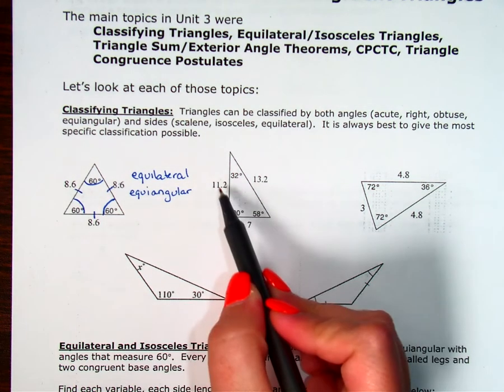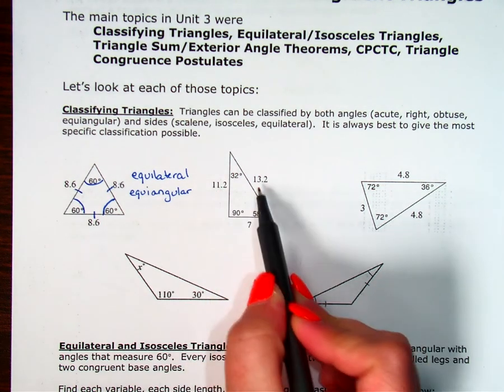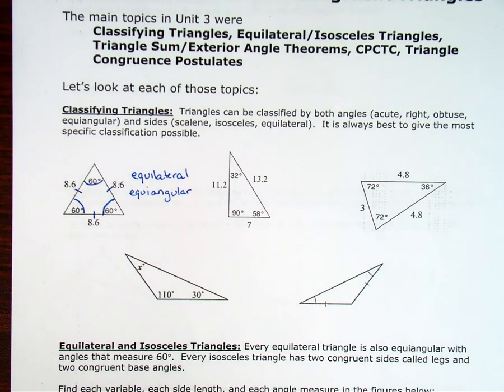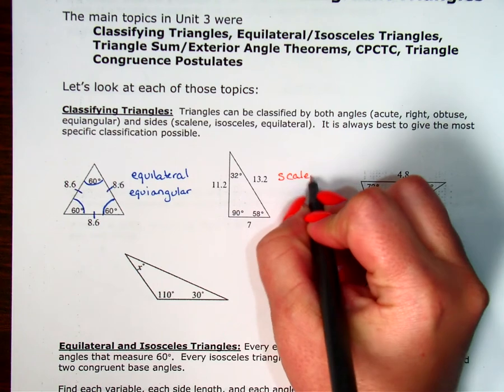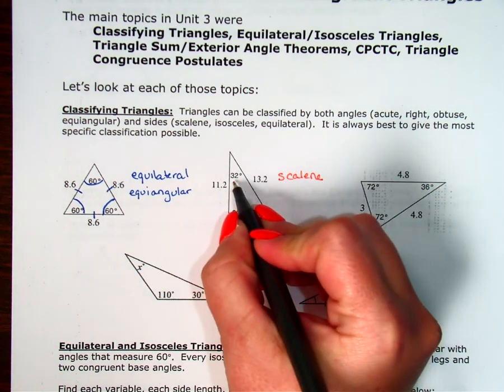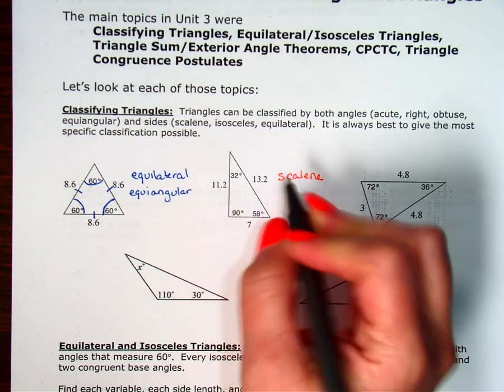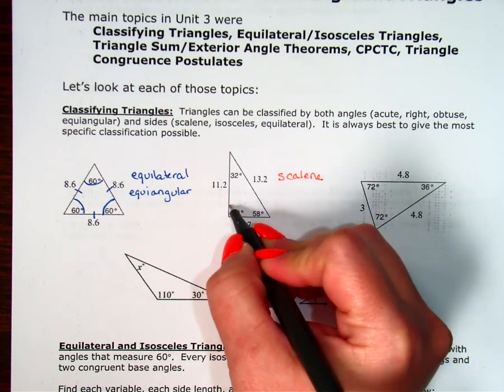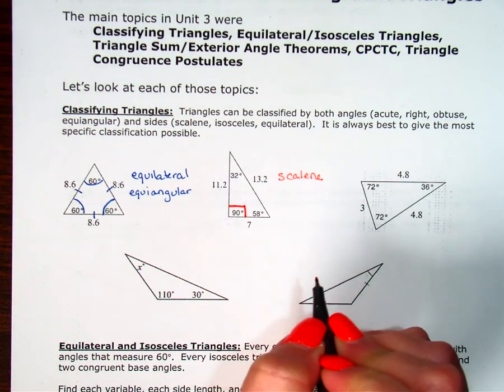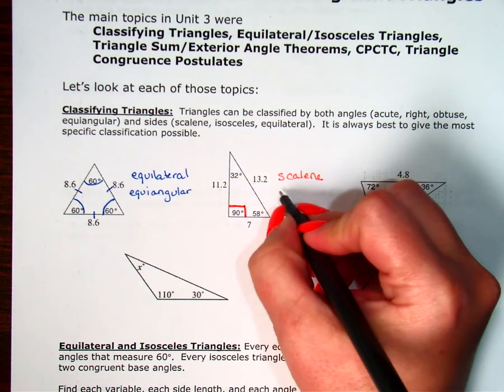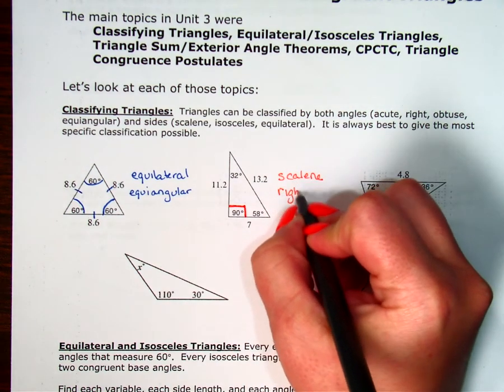When I look at the next one, when I look at the sides, 11.2, 7, and 13.2, those are all different side lengths, so this one is scalene. My angles are 32, 58, and 90, so I have acute, acute, and a 90. The 90 degree angle is the one that takes precedence when naming it, so we call this a right triangle.